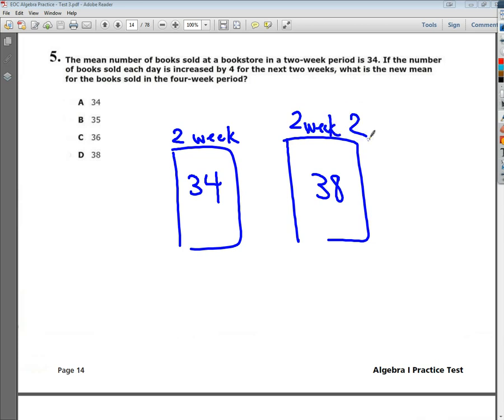What is the new mean for the books sold in the four-week period? So these two together, the 2 plus 2, that gives me that four-week period I'm looking for. All I have to do now is average these two together, and obviously the number that's in the middle of these two, since they're of the same number of weeks, is 36. So the answer to this question is C.